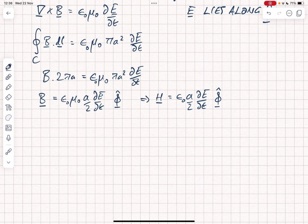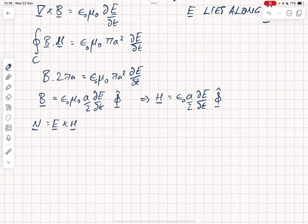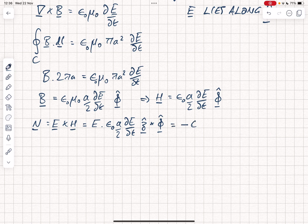Let's now think about the Poynting vector. So N, which is equal to E crossed with H, is going to equal E times epsilon naught A over 2 dE by dt. And then the direction is going to be, as we had in the previous example, it's going to be Z crossed with phi. So therefore, we have minus epsilon naught A over 2 E dE by dt R. Because again, what we find is that the energy is flowing into the gap between the plates. It's flowing radially inwards, according to the Poynting vector.